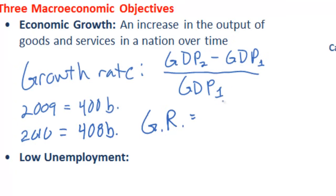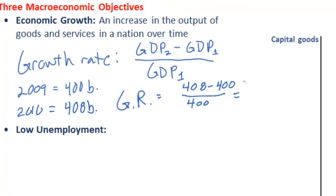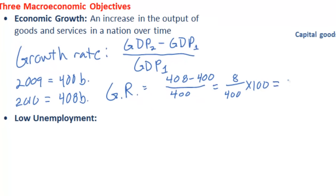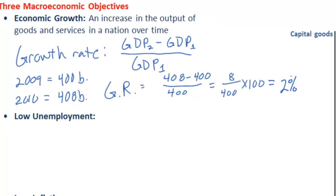To do that we take the new GDP of 408, subtract the original GDP of 400, and divide it by the base year GDP, which was 2009, which is 400. This gives us a GDP growth rate of 8 divided by 400, and if we multiply that by 100, we will get a percentage. Switzerland's GDP grew by approximately 2% between 2009 and 2010.